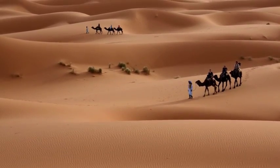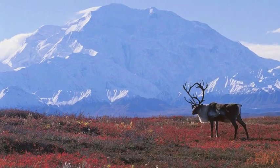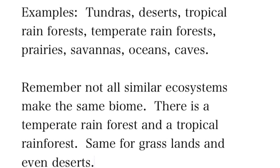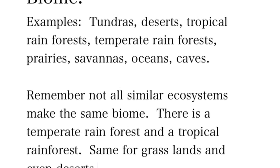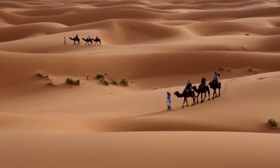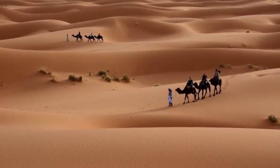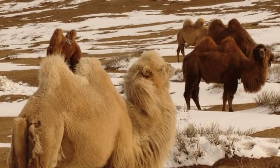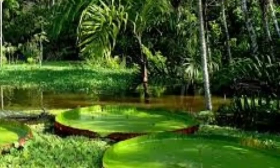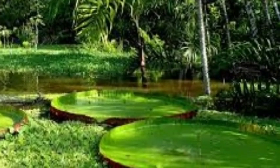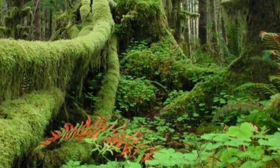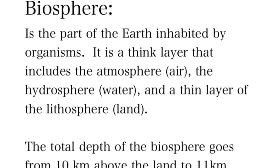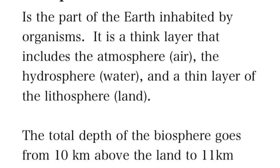A biome is a collection of all the same types of ecosystems. Interestingly, there are different kinds of deserts and different kinds of tundras. For example, you have the Sahara Desert, but also the Gobi Desert in China, which is freezing and covered with snow. Similarly, you have the tropical rainforest in the Amazon and a temperate rainforest in Washington State — so the same biome type can vary considerably.